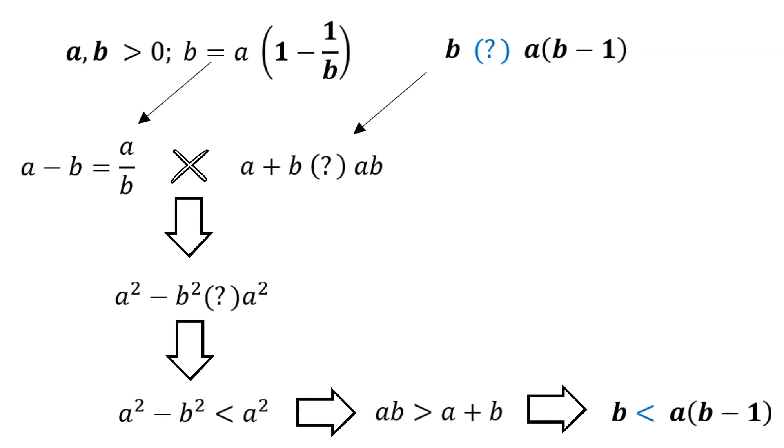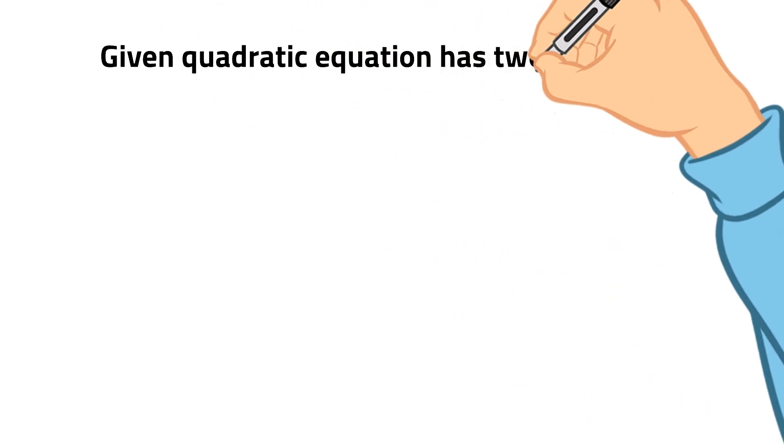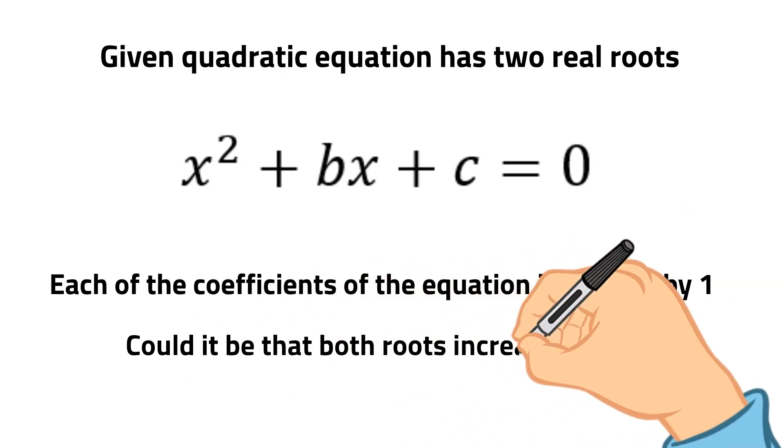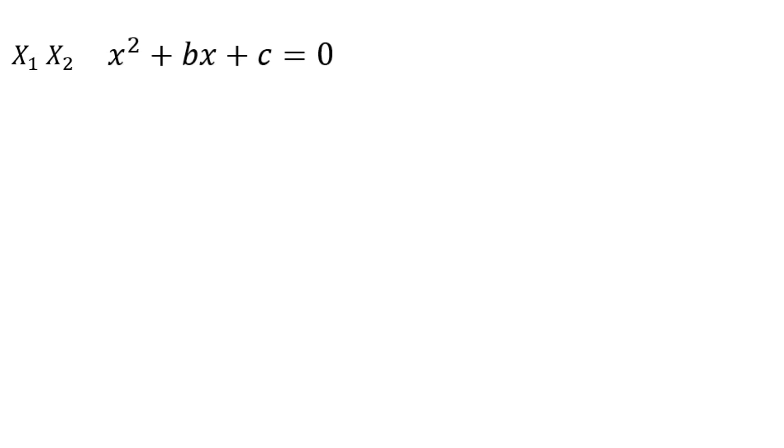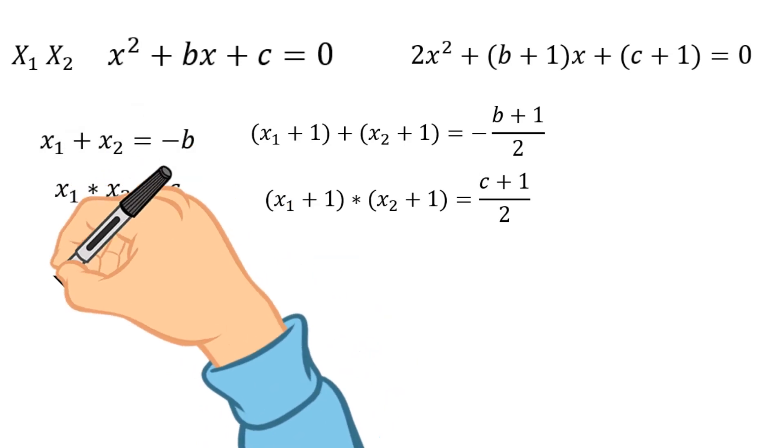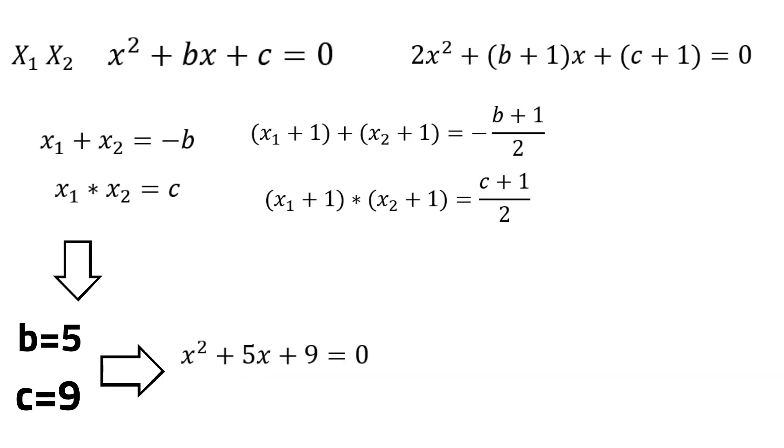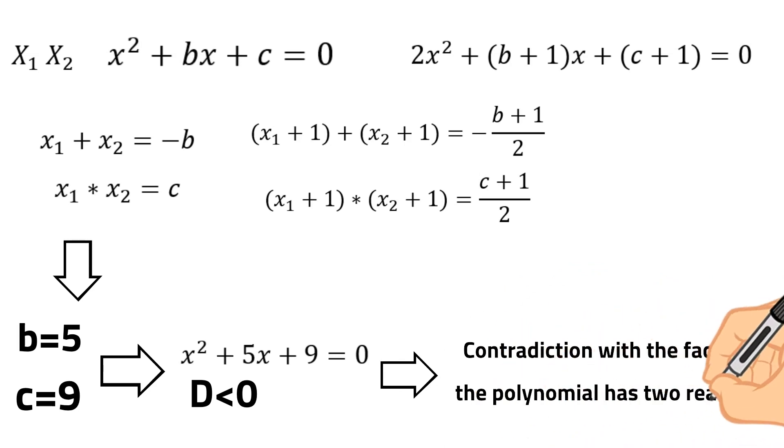Now, let's check the problem posed in the second video. We know that the given quadratic equation has two real roots. Then, each of the coefficients of the equation increased by one. Could it be that both roots increased by one? Let's assume that x1 and x2 are the roots of the given quadratic equation. Now, we can use Vieta's formulas for the sum and the multiplication of the roots. After each coefficient increased by one, the equation will have the following form. And Vieta's formulas can be written like this. Solving this system of equations with respect to B and C, we arrive at the solutions that B equals 5 and C equals 9. However, since the discriminant of this polynomial is negative, we come to the contradiction with the fact that the polynomial should have two real roots. Therefore, the described situation is impossible.